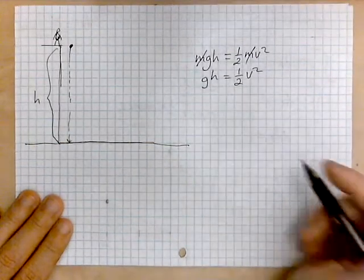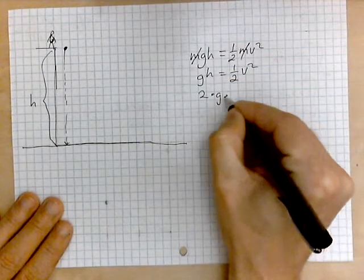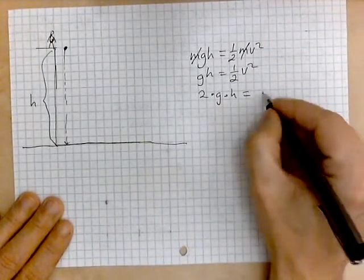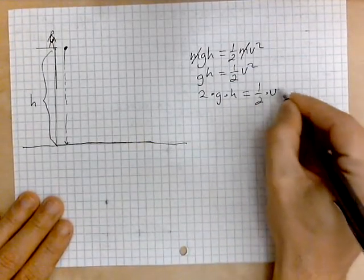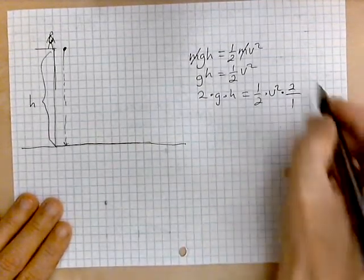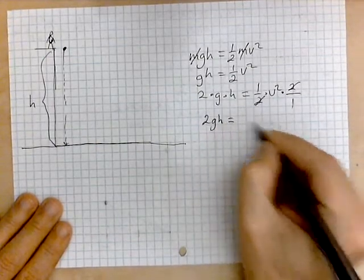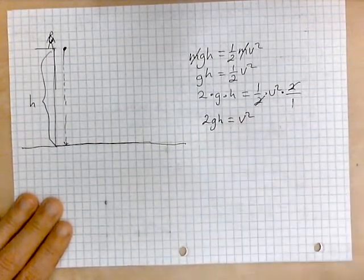So that will give two times G times H equaling one-half times v squared times two over one. So I cancel the twos. What remains is 2GH equals v squared.